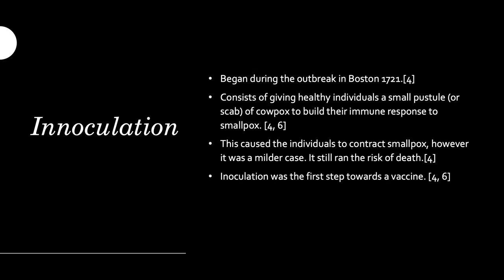Inoculation was created in Boston during the first epidemic in 1721. It consists of giving a healthy individual a pustule from an infected individual, or a pustule of cowpox — usually from milkmaids — to build their immune response to smallpox. It comes from the same overlaying family of disease, but is not specifically variola major or variola minor. This caused healthy individuals to create an immune response, though it still carried the risk of death, since at the time we had no cure. We still do not have a cure for smallpox — all we can do is treat it — but this process eventually led us to find a vaccine that works.